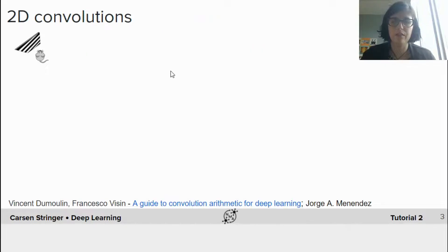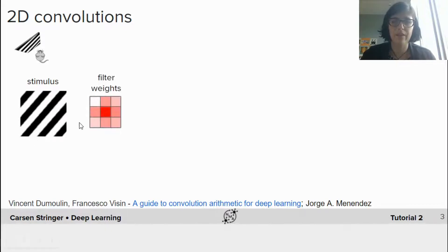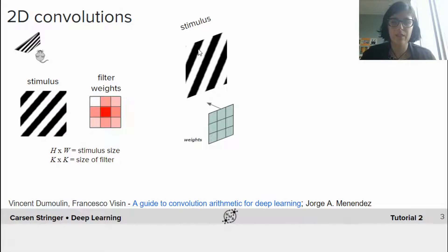What is a 2D convolution? The convolution is the integral of the product of two functions, one of which is a stimulus, and the other of which is a filter. We have two sets of dimensions here. So our stimuli are height by width, and then our filters are size k by k. And so we're going to take our stimulus and we're going to slide our weights across our stimulus.